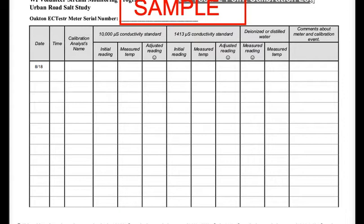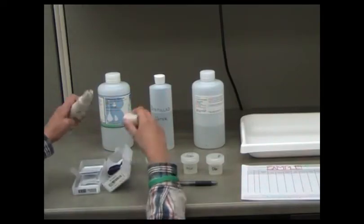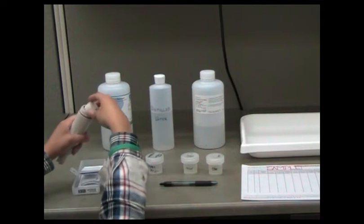Record the date, time, and name of volunteer or individual calibrating the meter on the two-point calibration log. Unscrew the cap from the top of the meter and remove the protective cover from the bottom of the meter. Set these pieces aside.